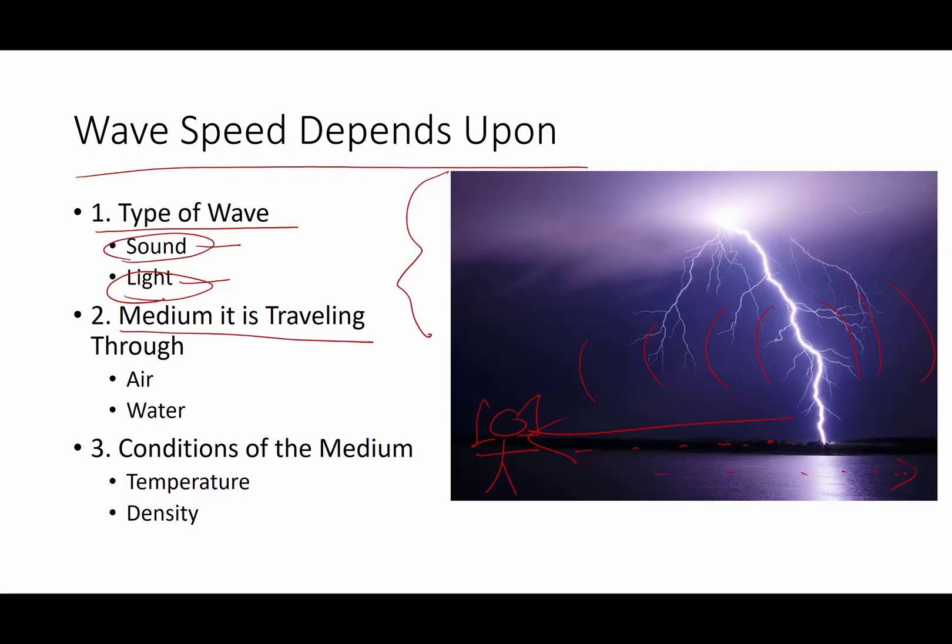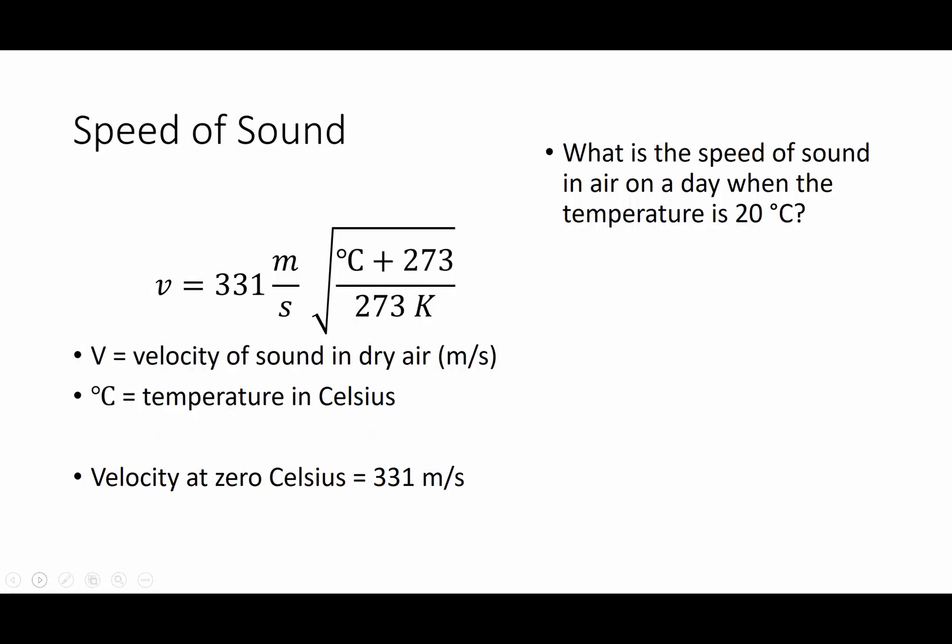What medium is the wave traveling through? Is it going through air? Is it going through water? You can see underwater, so you know that light can travel underwater. And you can hear underwater to some extent, so sound can travel down there. So the medium is going to have an effect on the speed. And what are the conditions of the medium? What's the temperature? What's the density? We're talking about water. What's the salinity? All of these things are going to have an effect, and we have to take those into account.